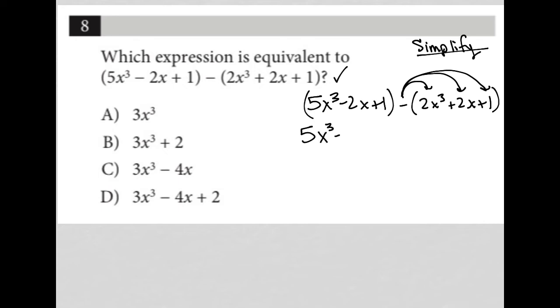So I have 5x cubed minus 2x plus 1, but then I'm going to have negative or minus 2x cubed minus 2x and minus 1, because of the negative sign distributing across to every term there.